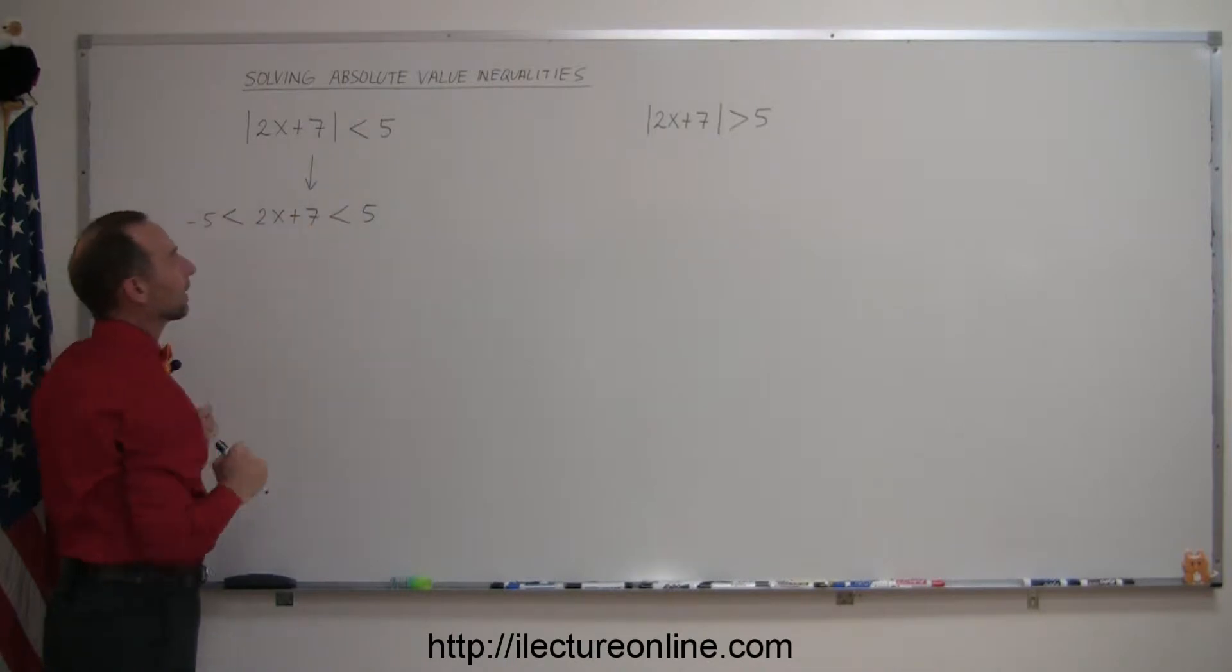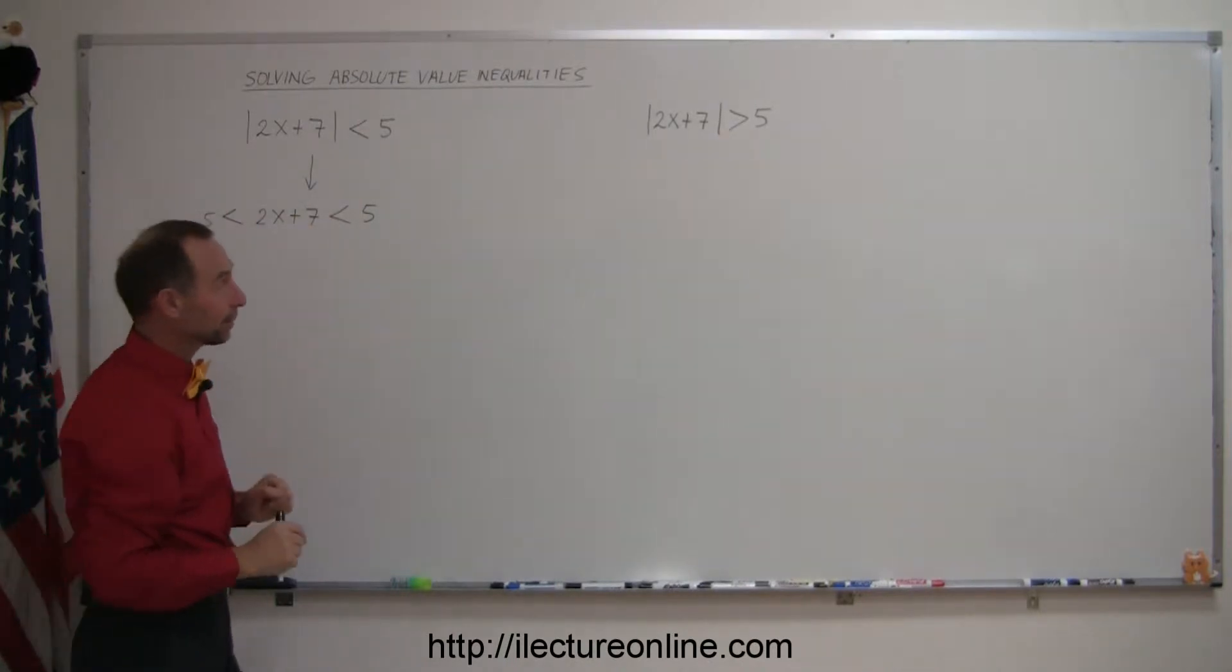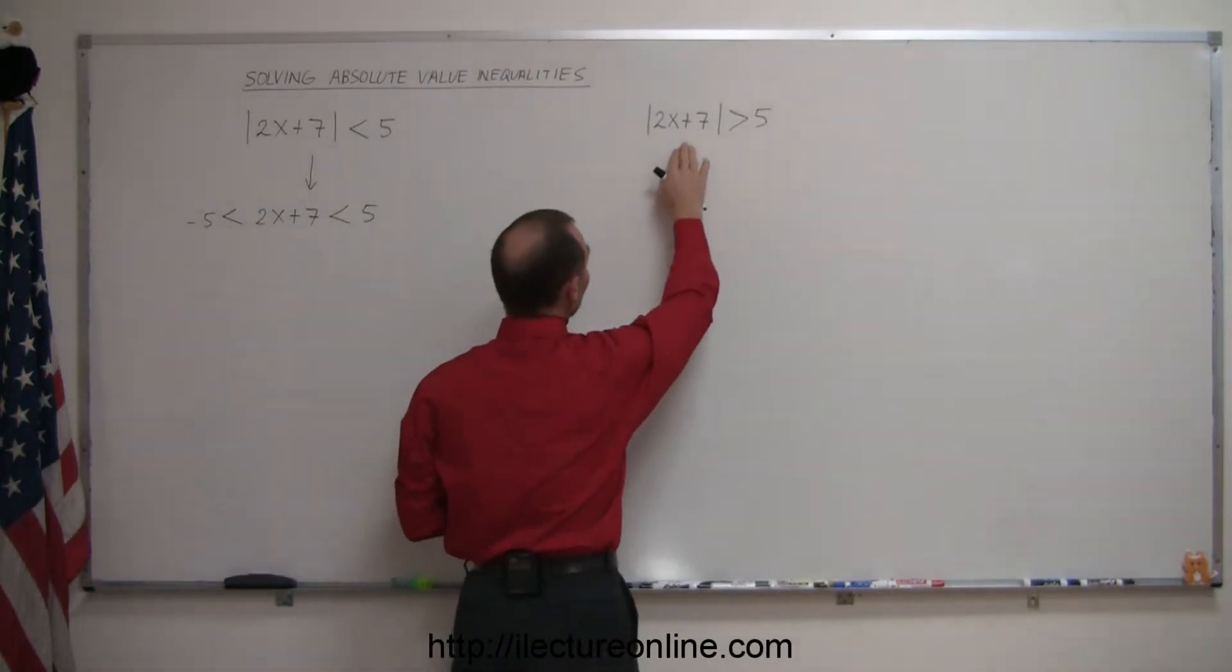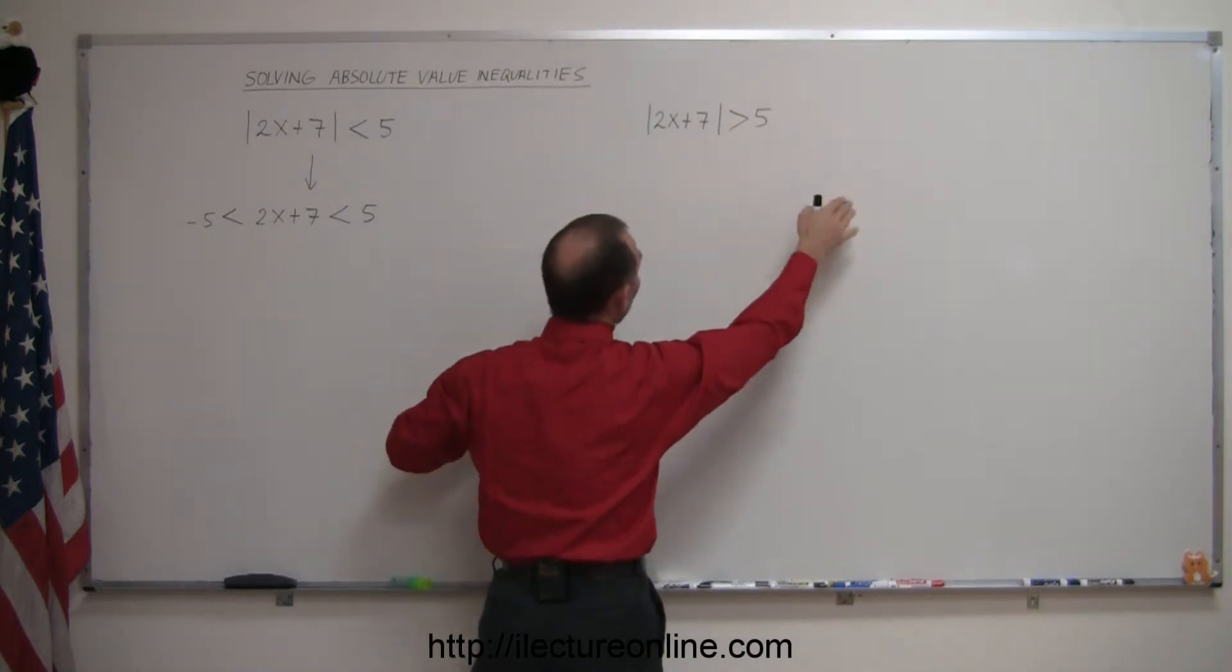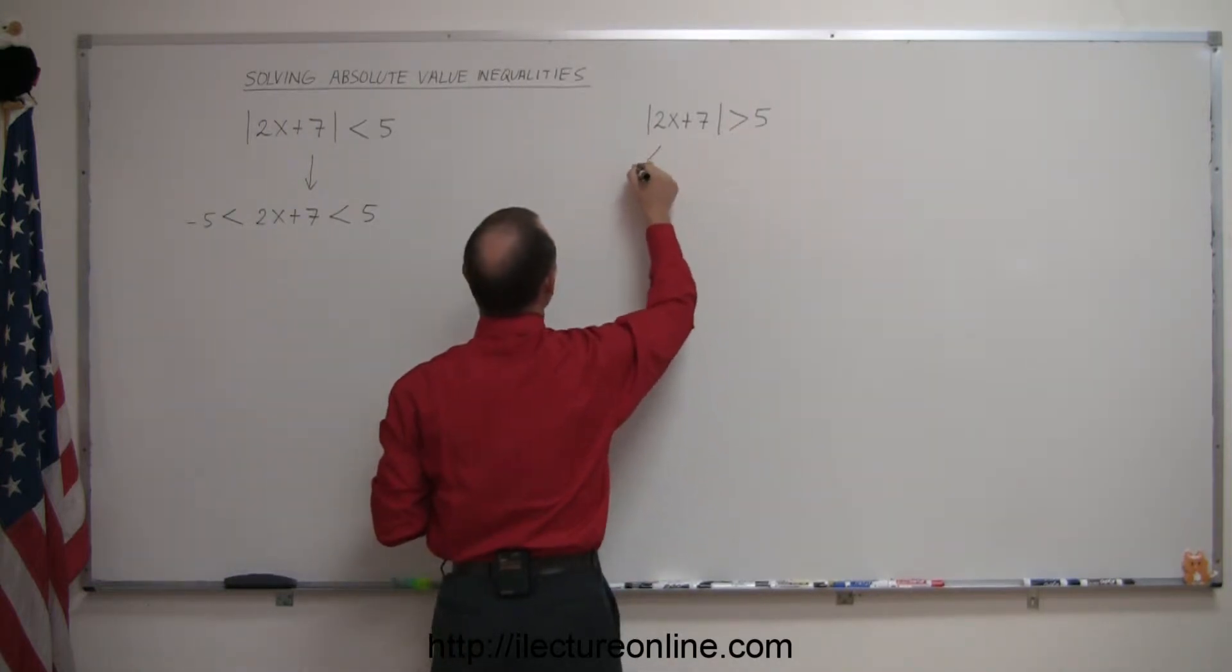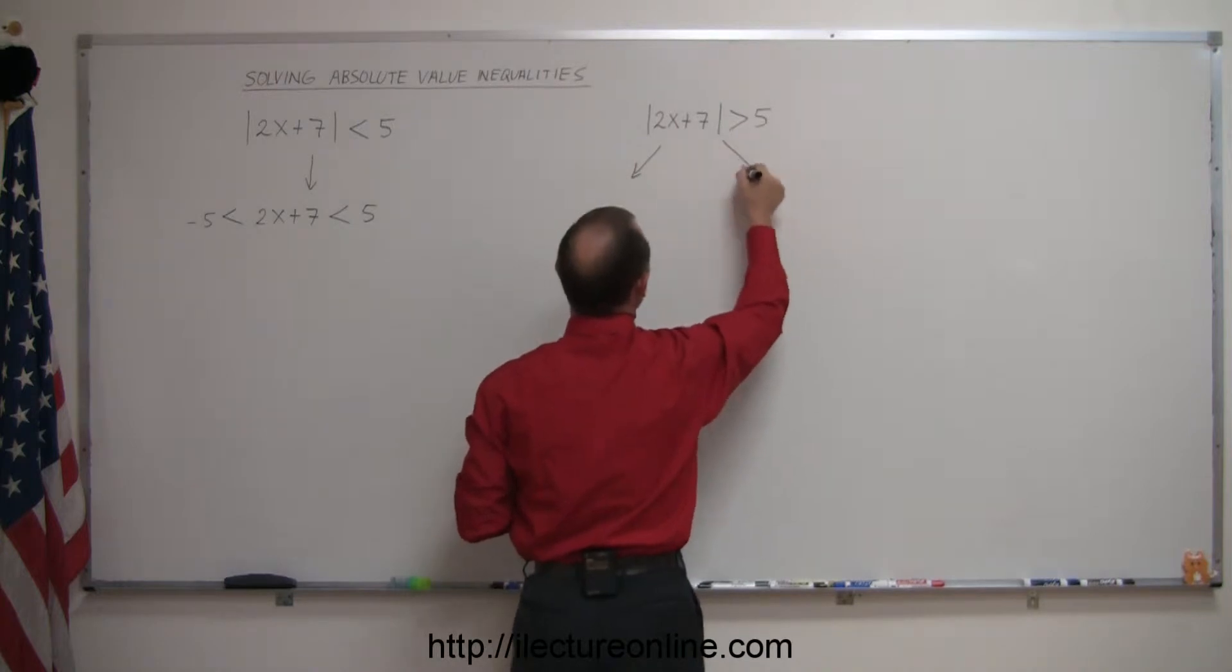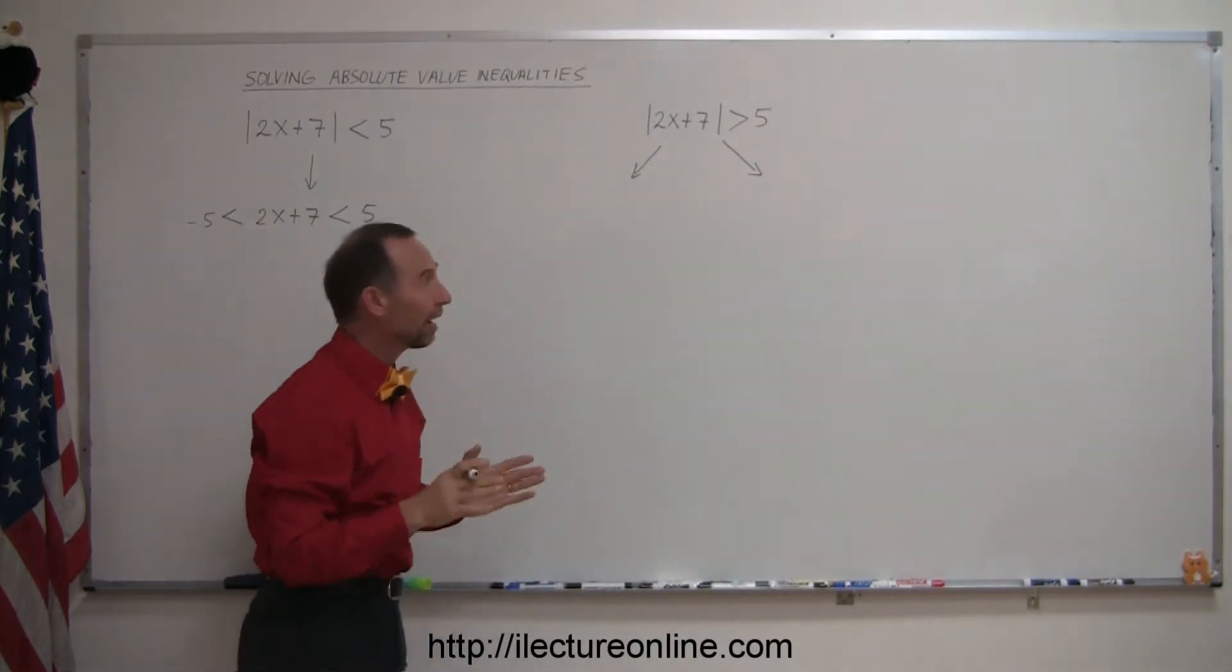But this cannot be written like that. In a case like that, the 2x plus 7 lies outside the 5 or the negative 5. So, what you can do is this can then turn into two problems, like so, and the conditions both have to be met.